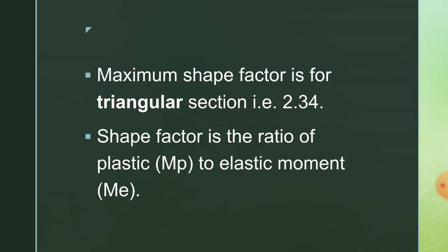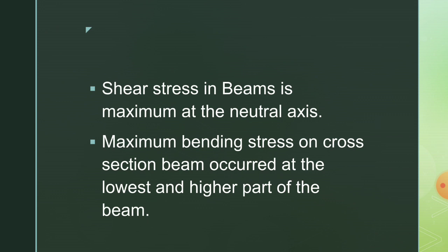The maximum shape factor is for a triangular section, which is 2.34. Shape factor is the ratio of plastic moment to elastic moment, and it indicates the reserve strength of the material. Shear stress in beams is maximum at the neutral axis, that is at the center. Maximum bending stresses on a cross-section beam occur at the outermost fibers of the beam, and at the center, bending stresses are zero.